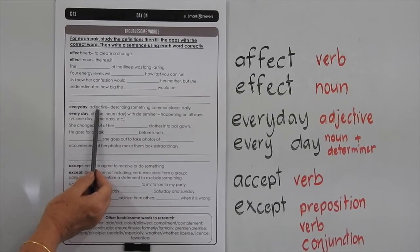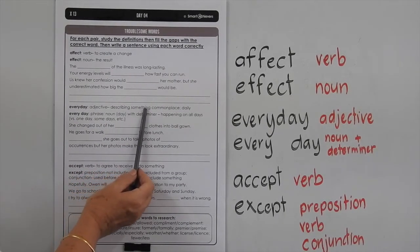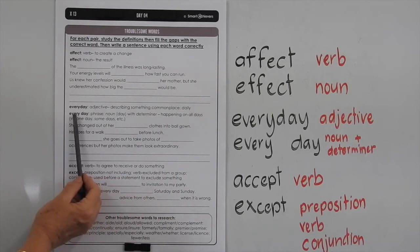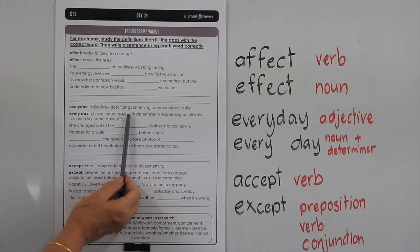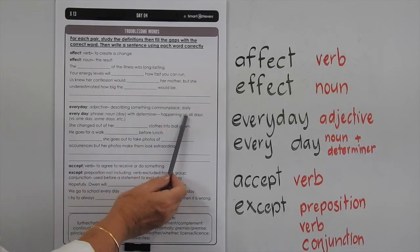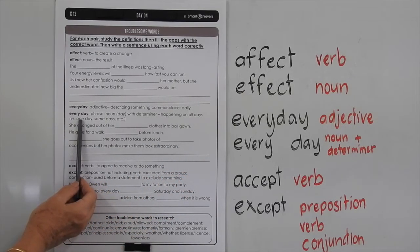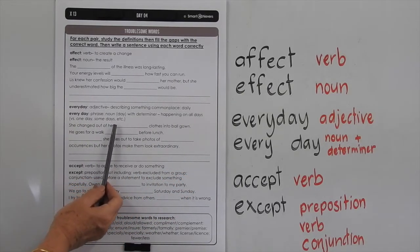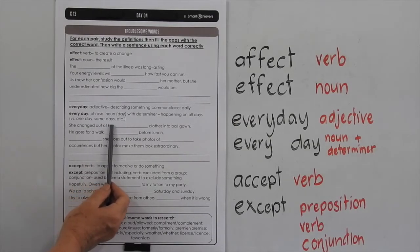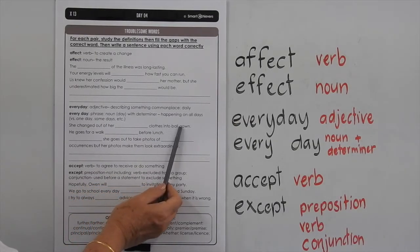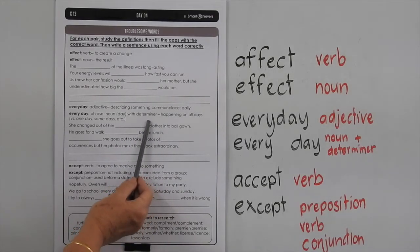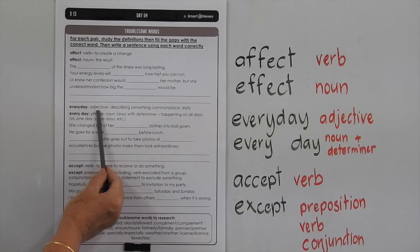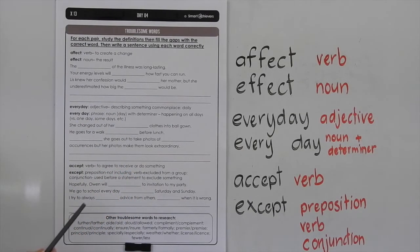'Everyday' is an adjective — it describes something commonplace or daily. Whereas 'every day' is a phrase — it's a noun 'day' with a determiner 'every', meaning happening on all days versus happening on one day or some days. So 'she changed out of her something clothes into a ball gown' — what's the structure of the word here? You can tell we're describing the clothes, so it's got to be an adjective. There's a hint that it would be 'everyday'. You can work through the others on your own.